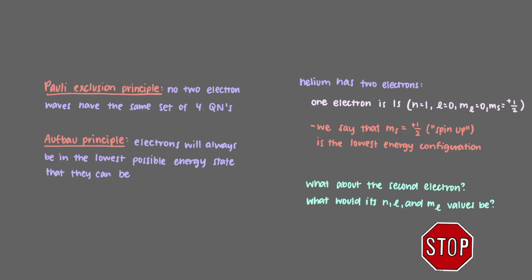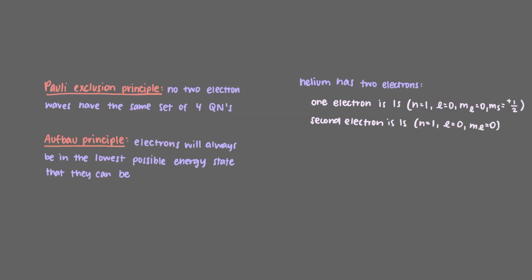What about the second electron? What would its n, l, and m sub l values be? This other electron would have the same n, l, and m sub l values. This is because the Aufbau principle tells us that electron waves will be the lowest possible energy. But wait, doesn't this violate the Pauli exclusion principle? Don't worry, although the first three quantum numbers of these electrons are the same, these two electrons have different m sub s quantum numbers.